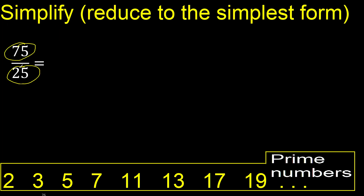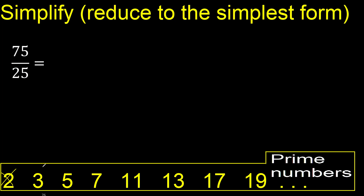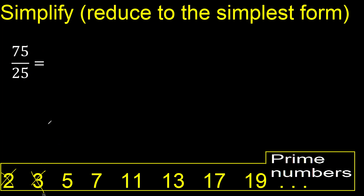75 and 25 cannot be divided by 2 because the last digit is not even. Cannot be divided by 3 because 25 cannot be divided by 3. Divided by 5, yes — 75 and 25 can be divided by 5 because the last digit is 0 or 5.